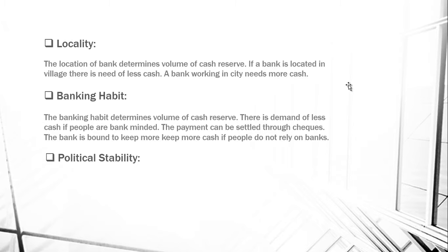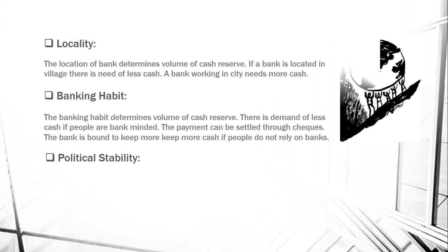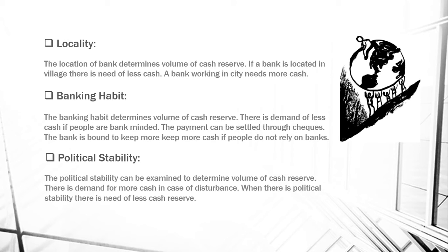Fifth is political stability: political stability can be examined to determine the volume of cash reserve. There is demand for more cash in case of disturbance. When there is political stability, there is need of less cash reserves.